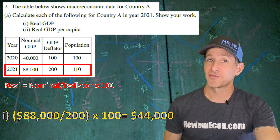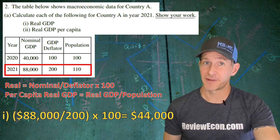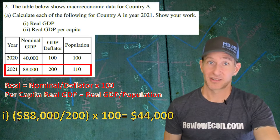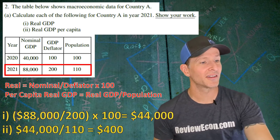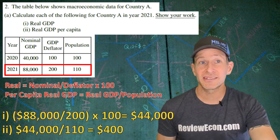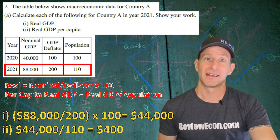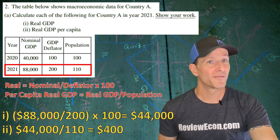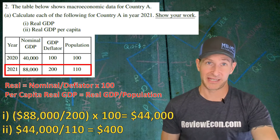The formula for per capita GDP is the real GDP divided by the population. So we're going to take that $44,000 and divide it by the 110 people that live in this country. That equals $400 worth of per capita GDP.